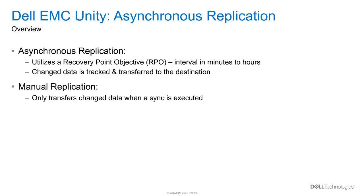Replication can be configured natively within a Dell EMC Unity system in three different modes: synchronous, which is not covered in this video, asynchronous, and manual. Asynchronous replication utilizes the concept of a recovery point objective, or RPO. The RPO is the acceptable amount of data, measured in units of time, which may be lost due to a failure.